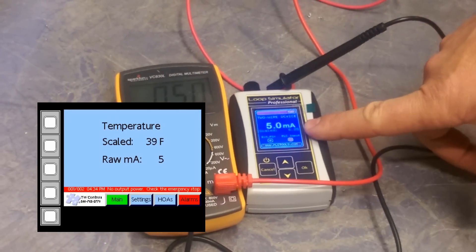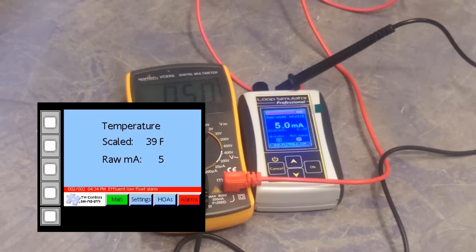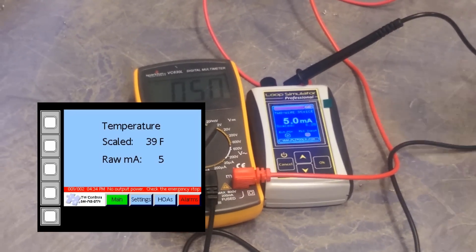We run up to five milliamps. You see we show five coming out. Our meter shows five. Our HMI shows five. And now our scale value is 39.